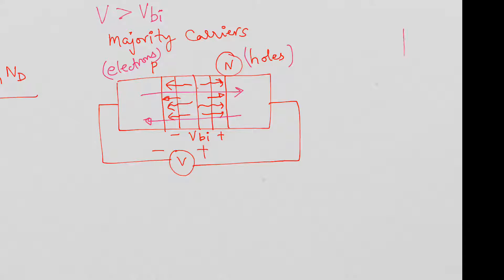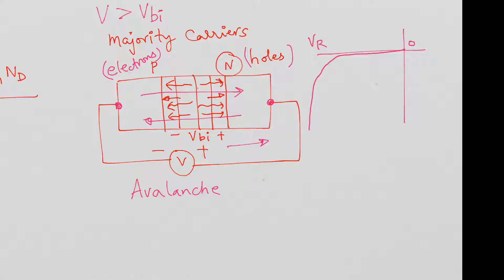In the reverse biased diode, we define the voltage as negative because we always measure it from P to N. The current is in the opposite direction, so there is a very small reverse current. After a certain reverse voltage, the current takes off — this is what we call avalanche breakdown. As voltage increases, minority carriers dislodge more and more carriers from their bonds, leading to an avalanche. The current increases rapidly.